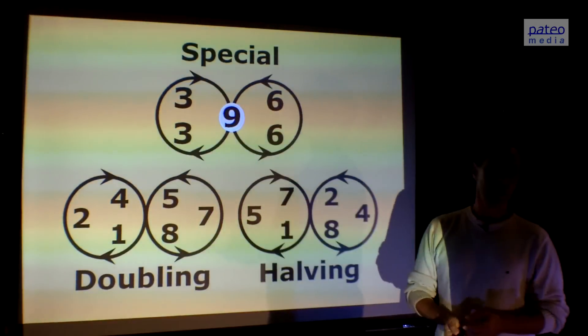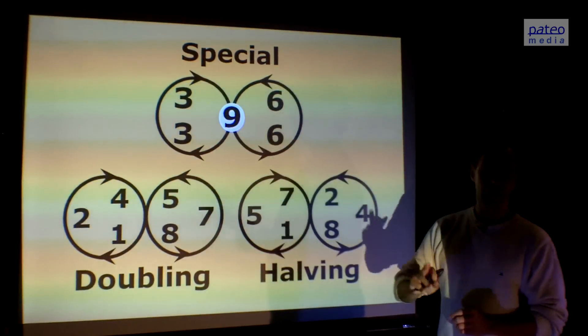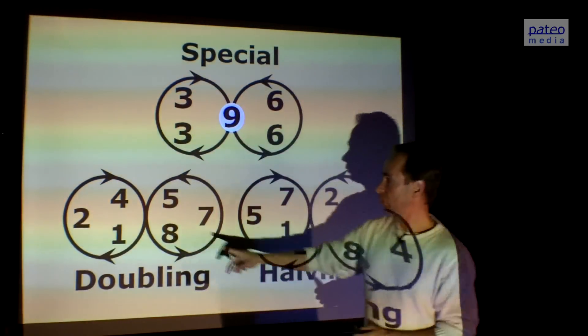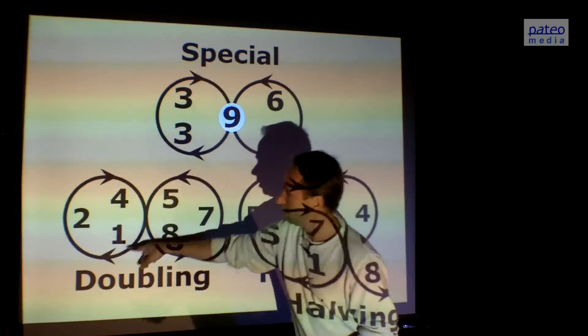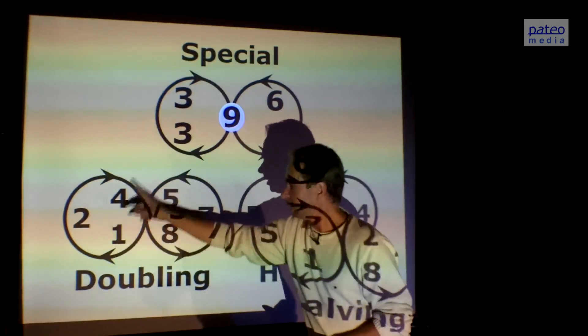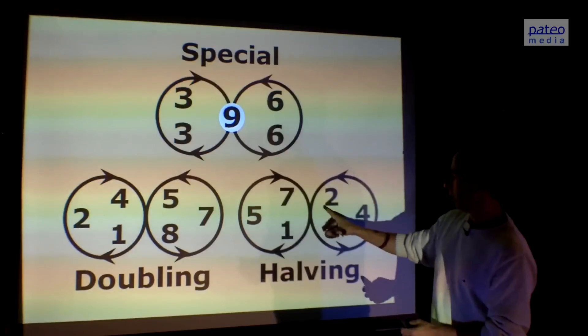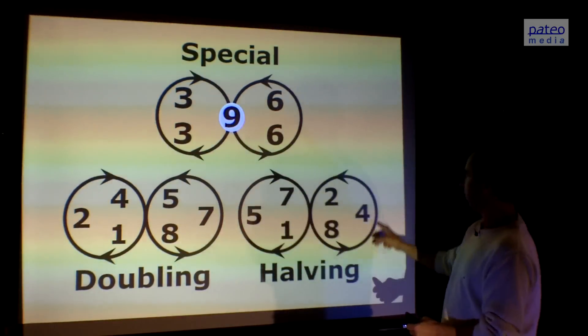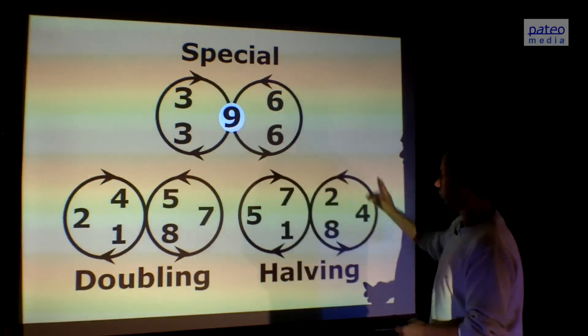Here we see them visualized as lemniscates. This is the rhythm of one, two, four, eight, seven, five. One, two, four, eight, seven, five. This is the doubling sequence. This is the other one: one, five, seven, eight, four, two. One, five, seven, eight, four, two. It's the other way around.